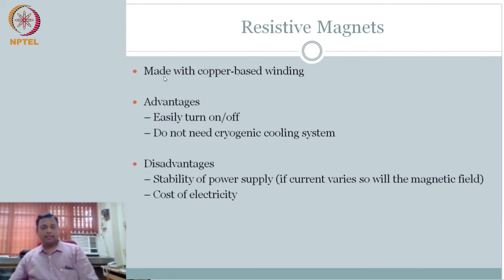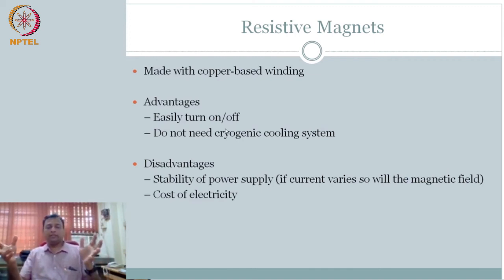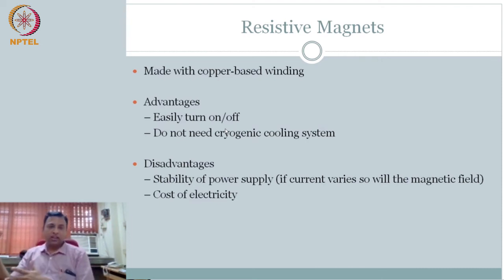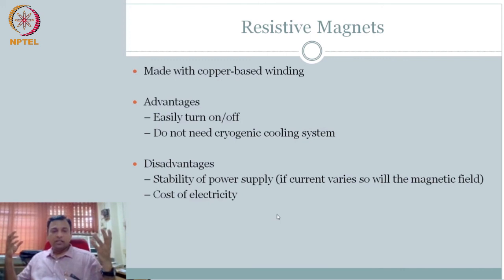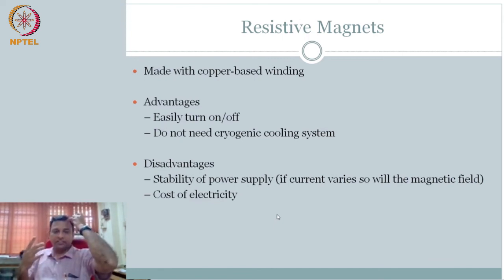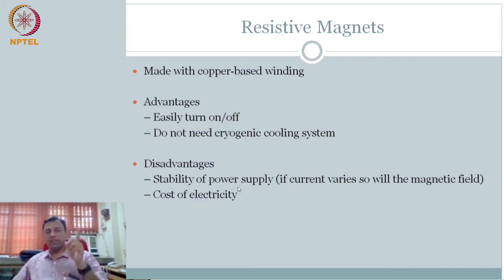Resistive magnets are slightly better than permanent magnets in that you can turn them on and off, and they do not need a special cooling system. However, the key disadvantage is that they run on electricity, and fluctuations in the power supply change the current, which changes the magnetic field — and you do not want the magnetic field strength to change. Also, the achievable Tesla is still only in the fractions. So resistive magnets also have significant limitations.